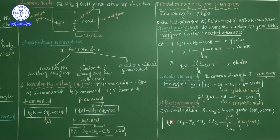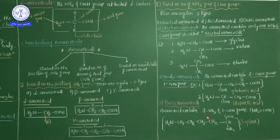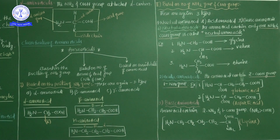The best example is lysine. Structure: NH2-NH2-CH2-CH2-CH2-CH2-CH2-CH(NH2)-COOH. Lysine has two amino groups and one COOH group, so lysine is the best example of a basic amino acid. These examples and structures are very, very important, my dear students.